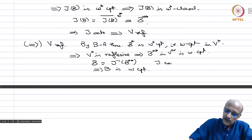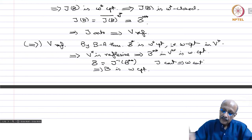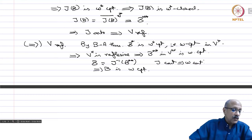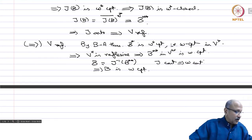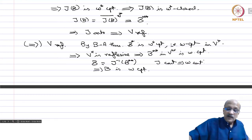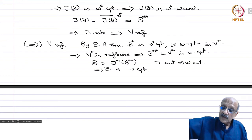J is continuous implies weakly continuous, so B is weakly compact. This proves the theorem completely. Now there are lots of nice corollaries to this result.